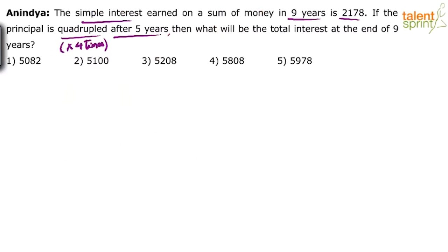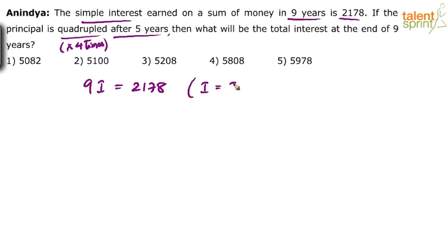Interest per year is i. So basically for 9 years the interest will be 2178. I can say 9 times i equals 2178, as per the question, where i is the interest per year.